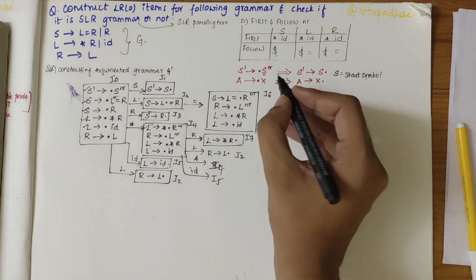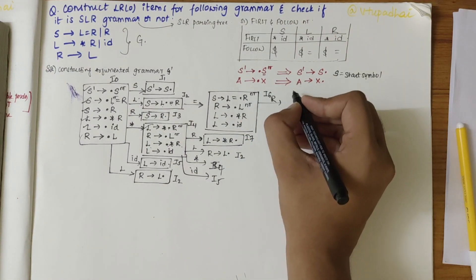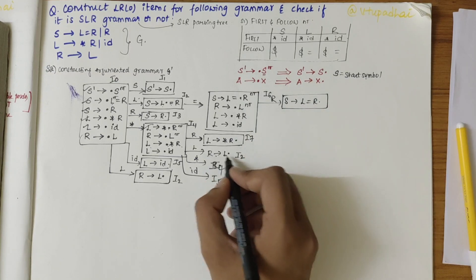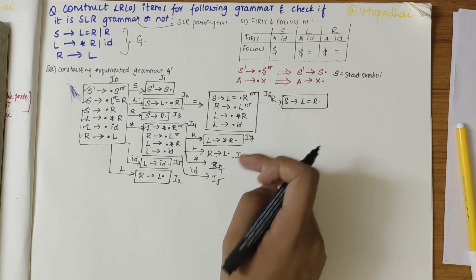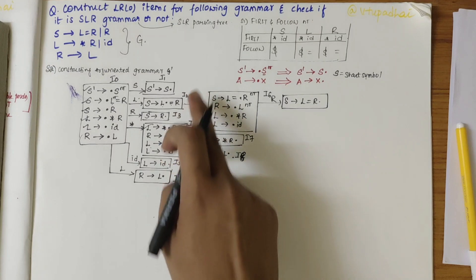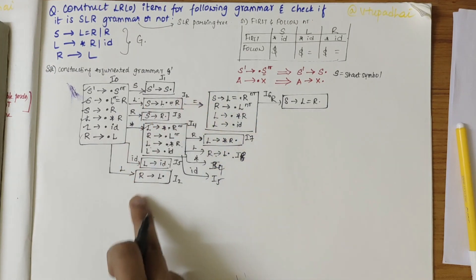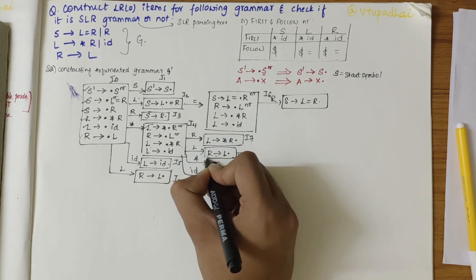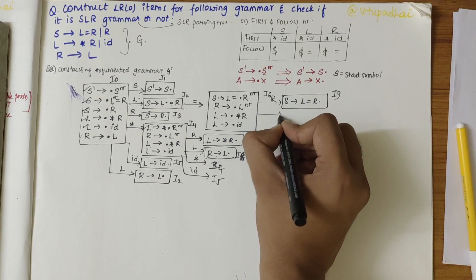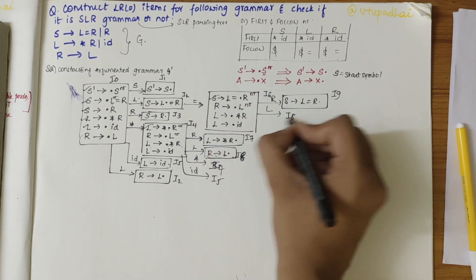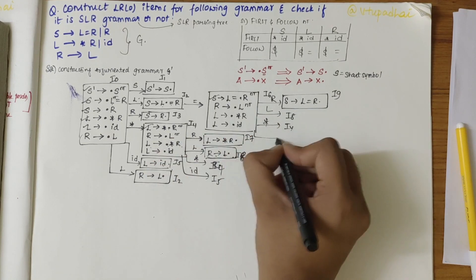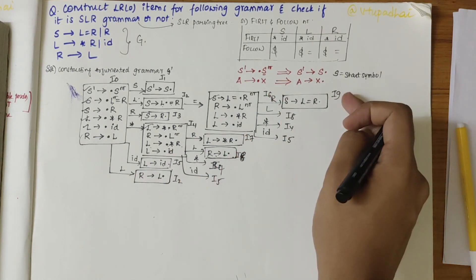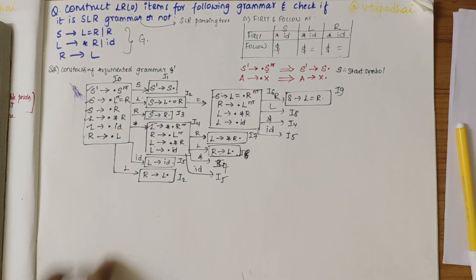Over L in I6, I get I8. Over star in I6, I get I4. Over ID in I6, I get I5. I am done with I6, I7, I8, and I9 — you can't further expand them. I have now obtained the complete augmented grammar. My next step is to draw the SLR parsing table, writing all terminals, non-terminals, and items.